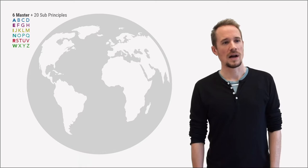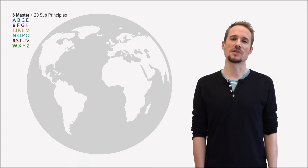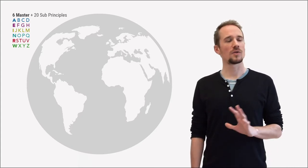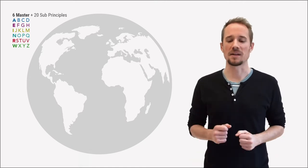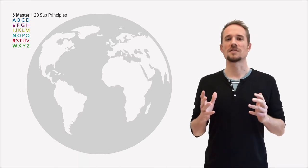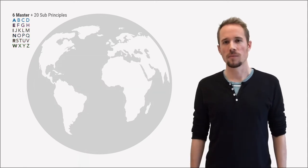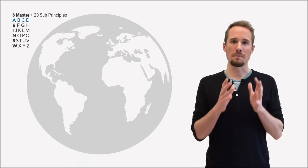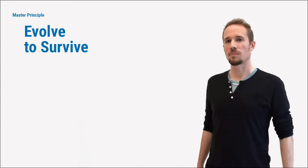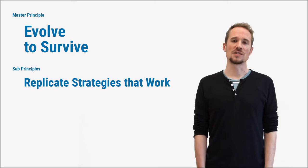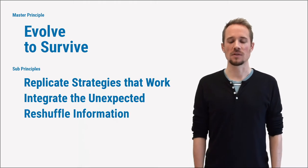So how has life managed to exist and survive for billions of years on this planet, and in all of those ages the conditions on earth have changed dramatically? Well the simple answer is evolution. In this part we're going to talk about four principles starting with the master principle evolve to survive, and three sub-principles: replicate strategies that work, integrate the unexpected, and reshuffle information.